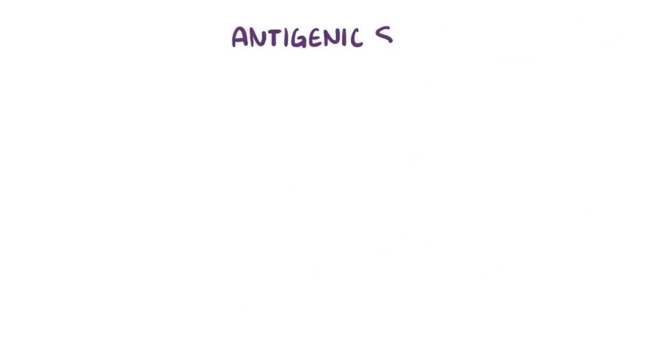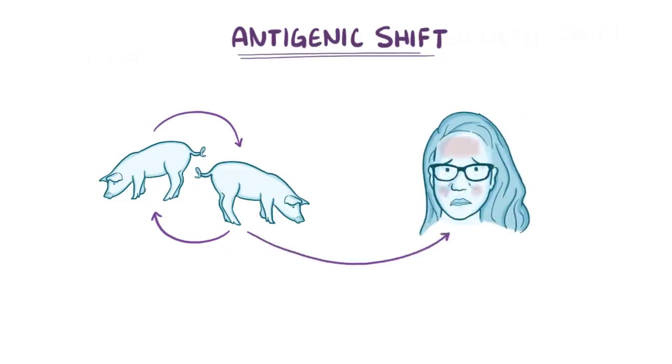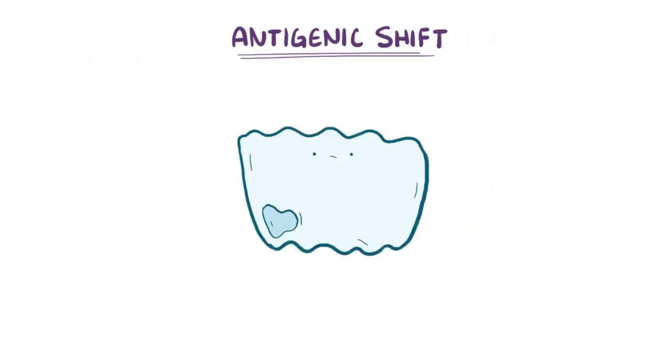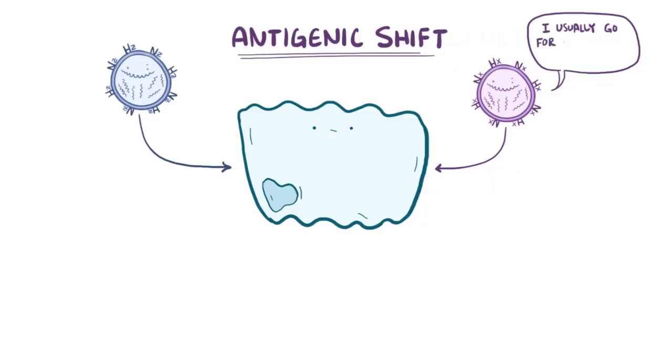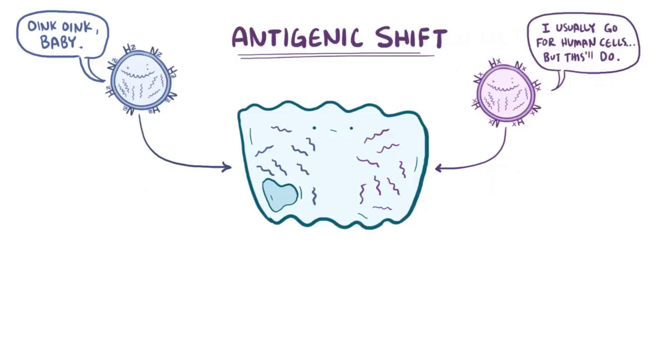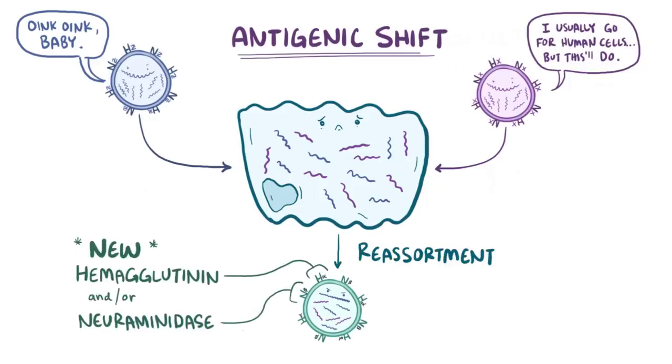In addition, a process called antigenic shift is where sometimes a virus will be circulating among animal populations like pigs or chickens, and then it'll suddenly change in a way that allows the virus to infect humans as well. This happens when the same cell, let's say a pig cell, gets infected with two similar flu viruses, for example a flu strain that usually infects humans and one that usually infects pigs. Since the viral genome is in segments of RNA, the pieces might reassort, or mix, allowing new viruses to have a mix of RNA segments in them. Reassortment results in viruses that have entirely new hemagglutinin, neuraminidase, or both.